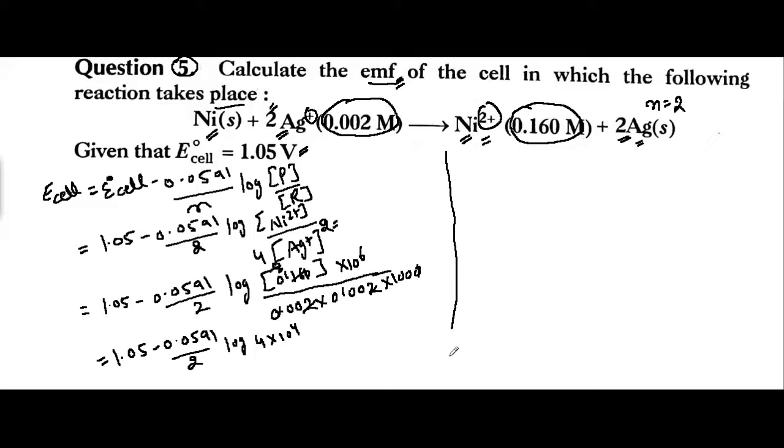We can solve it. First of all, 1.05 minus 0.0591 upon 2, then we have log 4 plus 4 log 10. Clear?